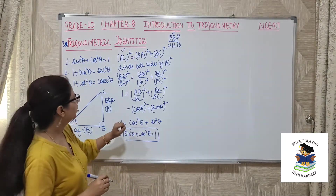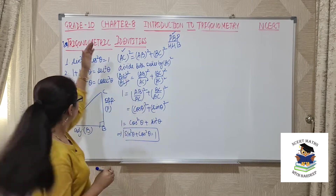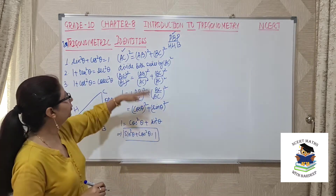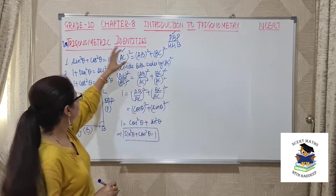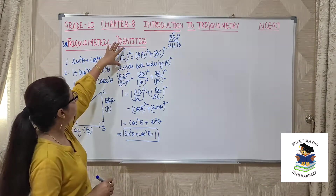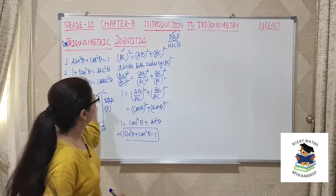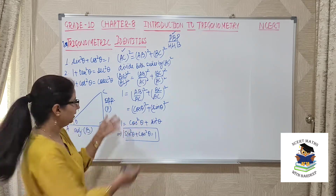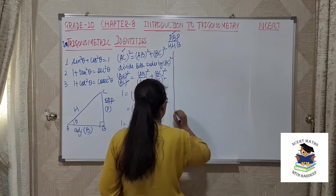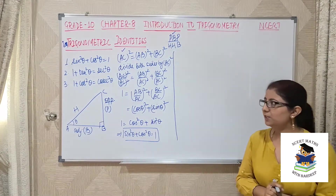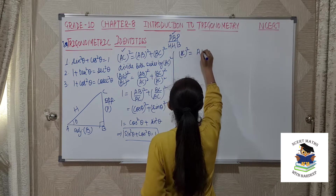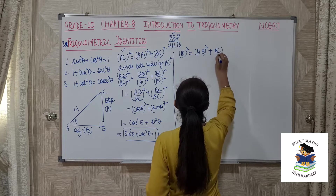Sometimes you need to memorize these formulas, but sometimes the exam will ask you to prove an identity. Now let's look at the second identity: 1 + tan²θ = sec²θ. We start similarly using the Pythagorean theorem: AC² = AB² + BC². We need two terms on one side and one on the other, and we know the identity involves tan²θ.